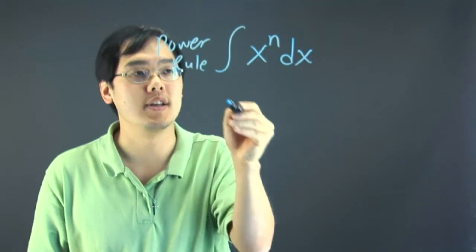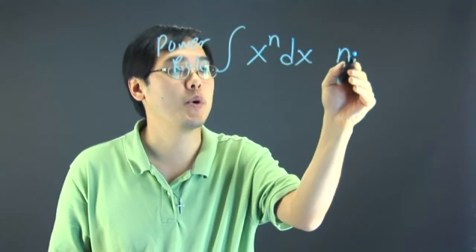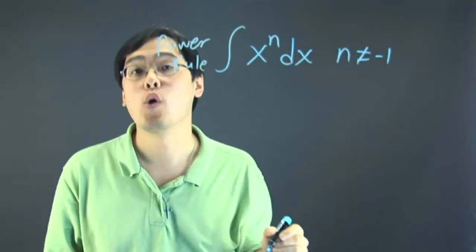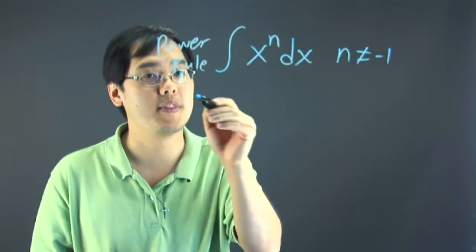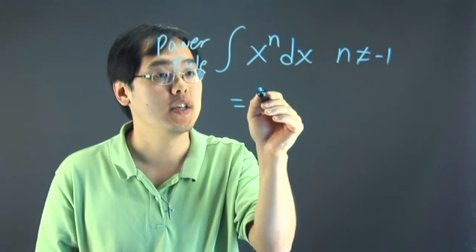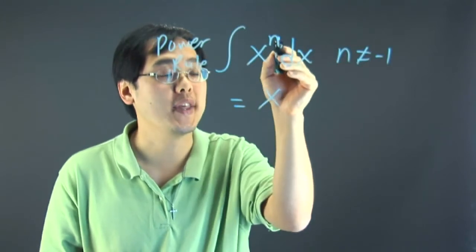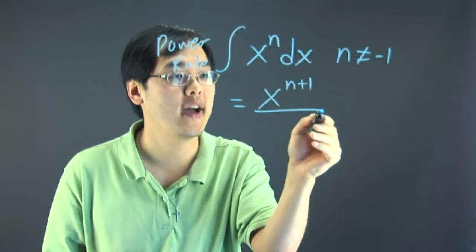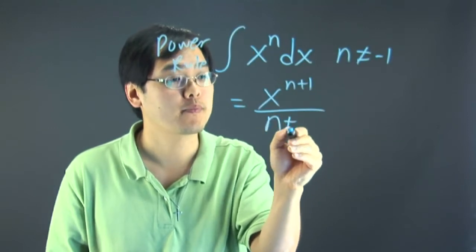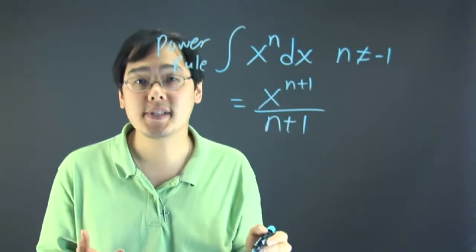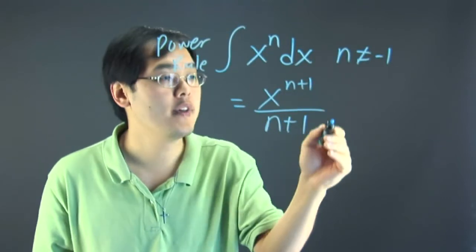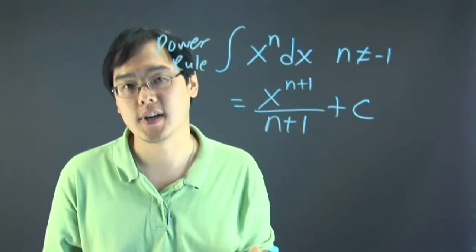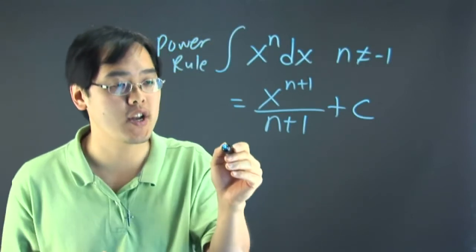Now the one condition here is your exponent cannot equal negative one. We're going to address that a little bit later on in another rule. But the rule for the power rule here is you take your x and with the exponent you add one to it and then you divide by n plus one. So basically what you're doing is you're dividing by the exponent that you see above and then you add the indefinite constant. So a really quick illustration of how to do this is,